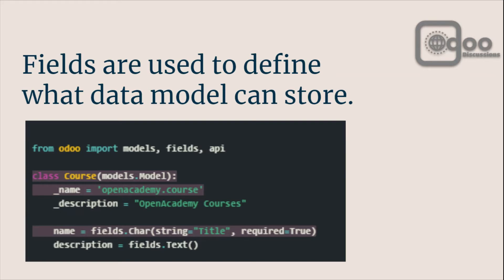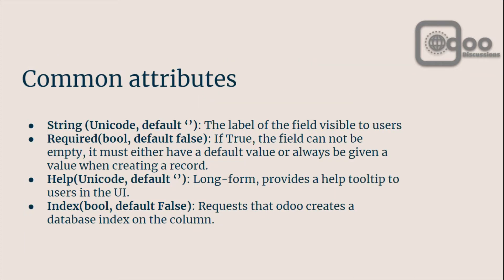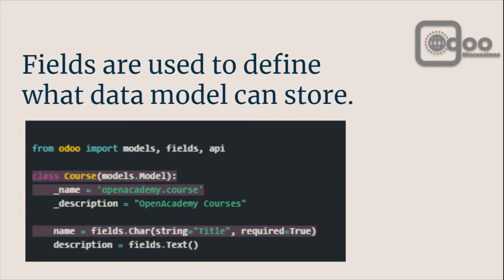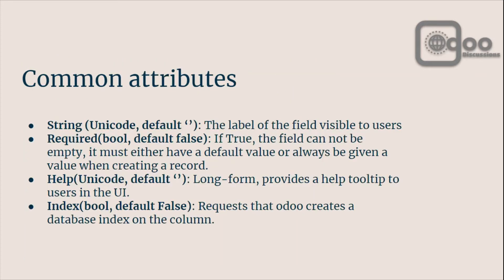We have added a field that can store data of type string. There are different types of fields like Char, Text, Date, and Datetime — we will explain them later. Common attributes: there are some common attributes we can define for a field. Here we have defined string='Title', and required=True. The string attribute is of type unicode with a default value of empty string — it is the label of the field visible to the user.